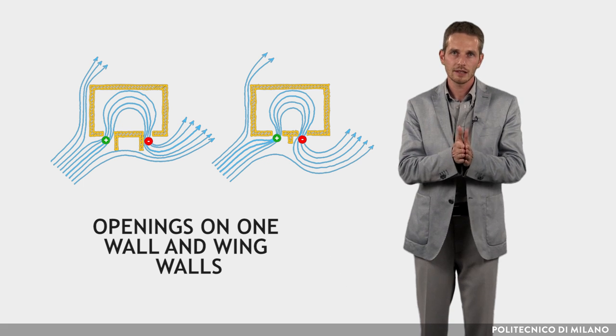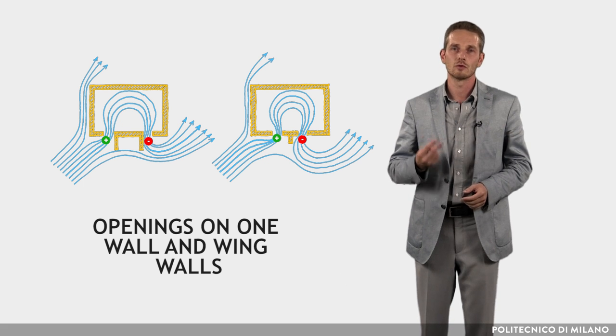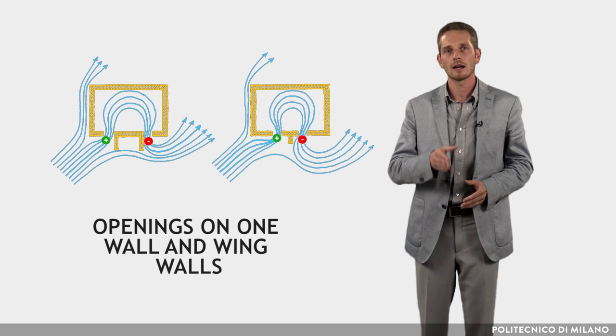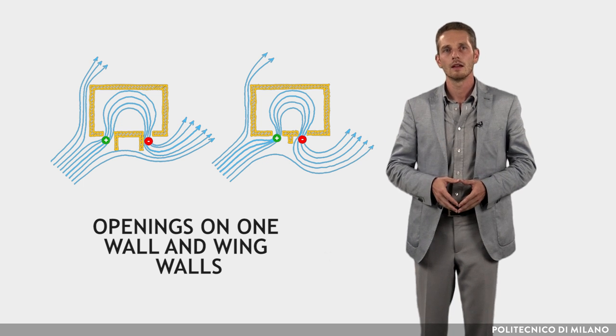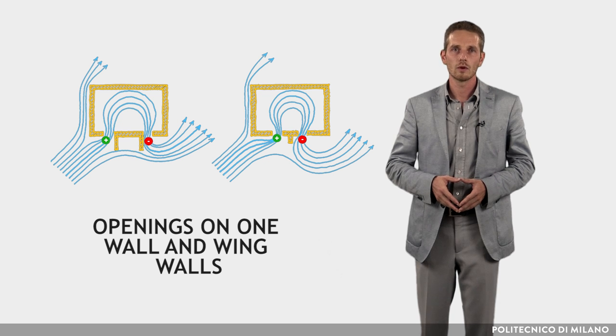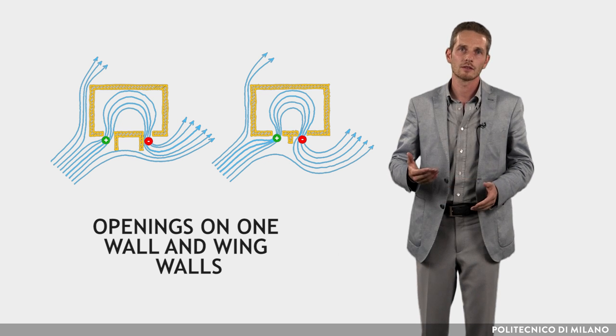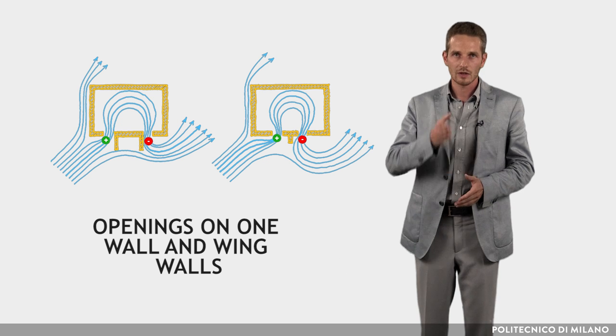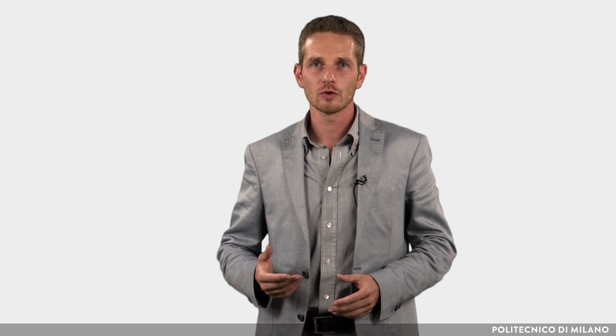This situation can be improved by splitting the single opening into two, positioning the parts as far apart as possible. If the wall is to windward, a further improvement is obtained by constructing a vertical fin.